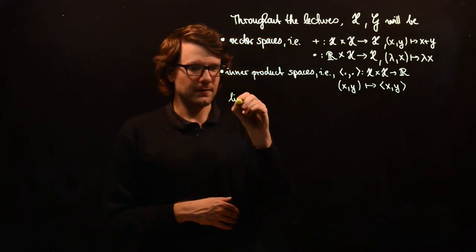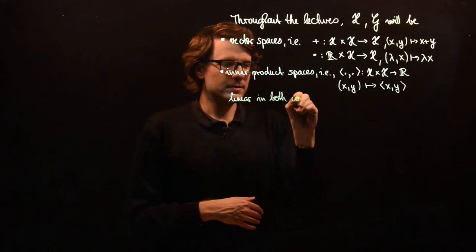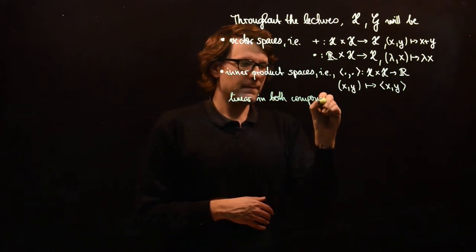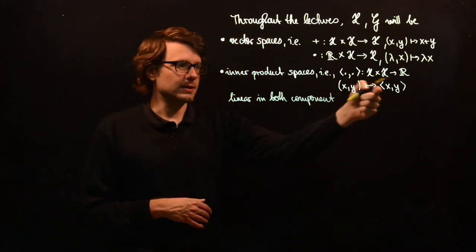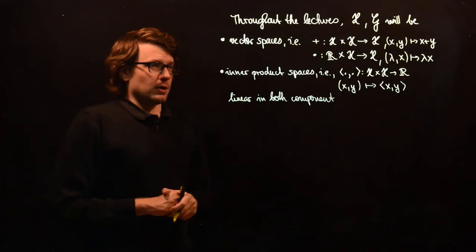So it's linear in both components because as I said we have real vector spaces, we don't need to take the complex conjugate here.